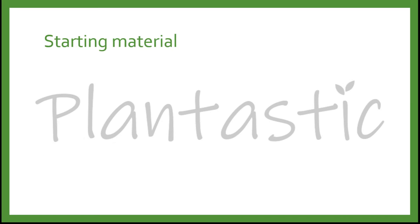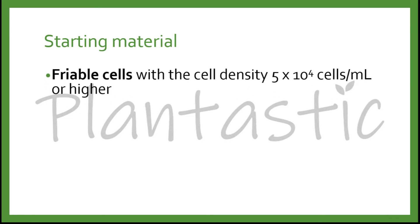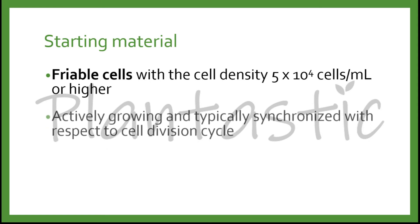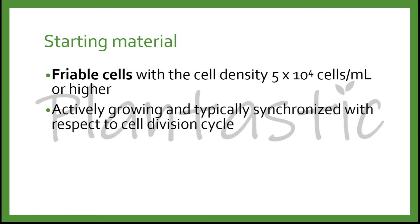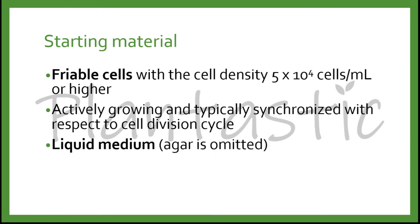What are the starting materials for suspension culture? We can use fibrous cells with a cell density of 5×10⁴ cells per milliliter or higher. We need the actively growing and typically synchronised cells with respect to the cell division cycle. The liquid medium whereby the agar is omitted.